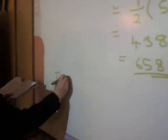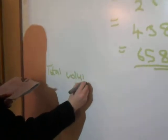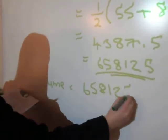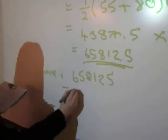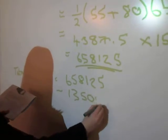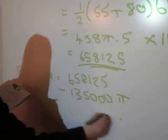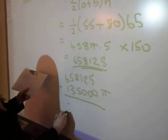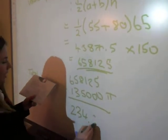So the total volume, 658,125, take away 135,000 pi, and it leaves you with an answer of 234,009.